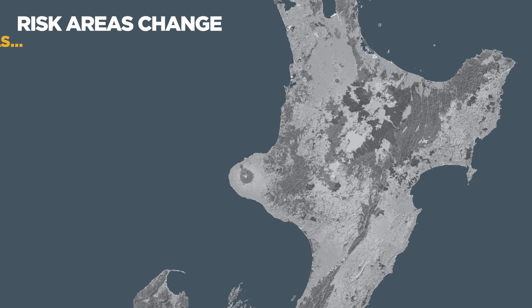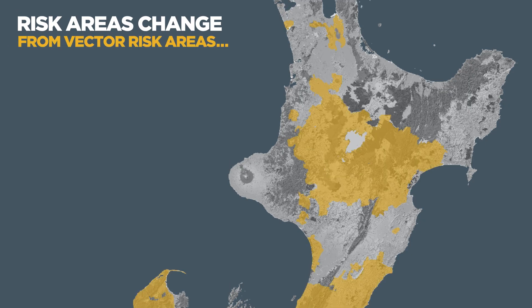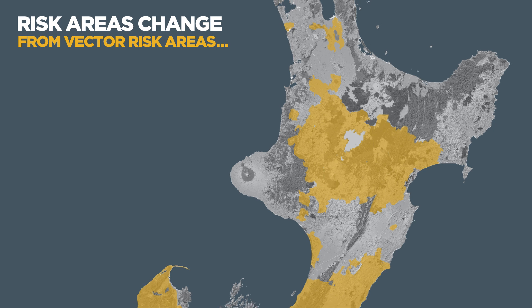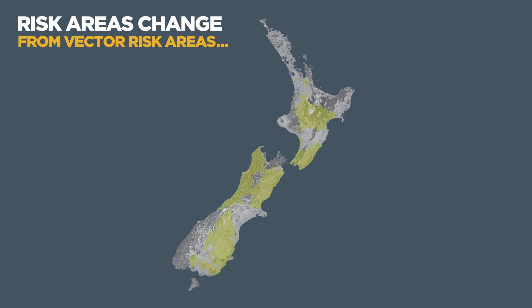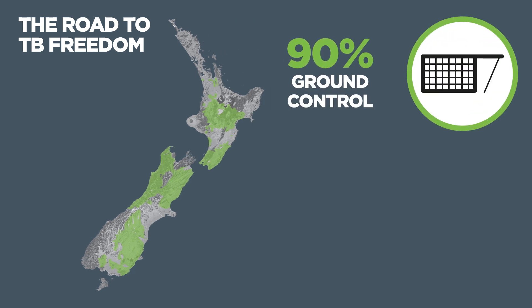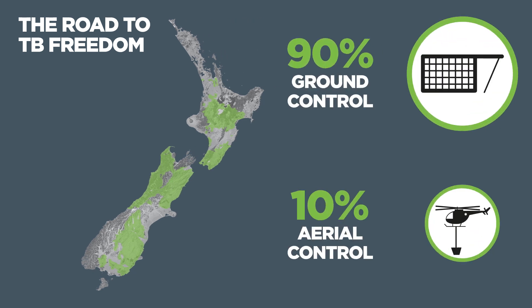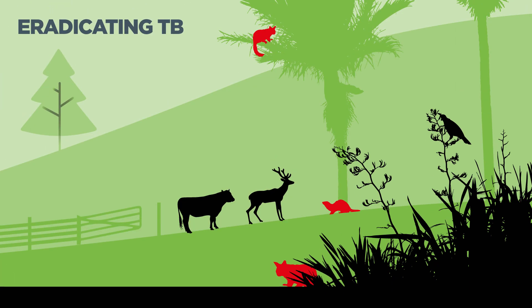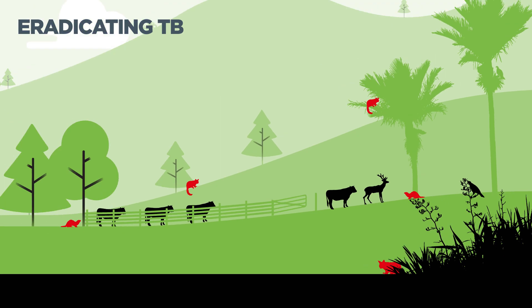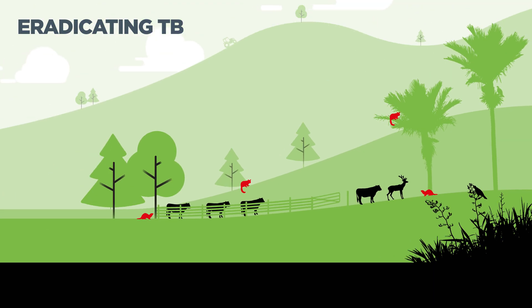Vector risk areas identify where it is believed TB exists in wildlife, and as we travel down the road to TB freedom, targeted possum control is undertaken with ground and aerial operations. Control operations reduce possum numbers to levels where TB can no longer be maintained.